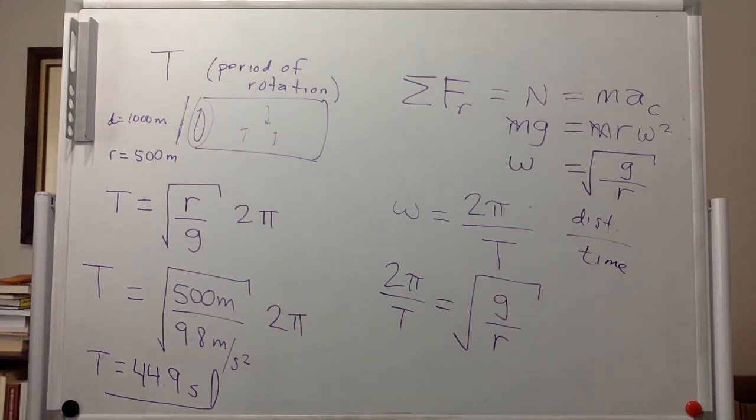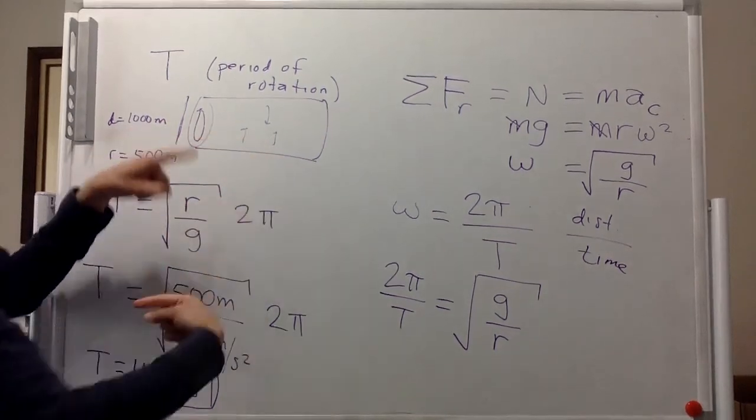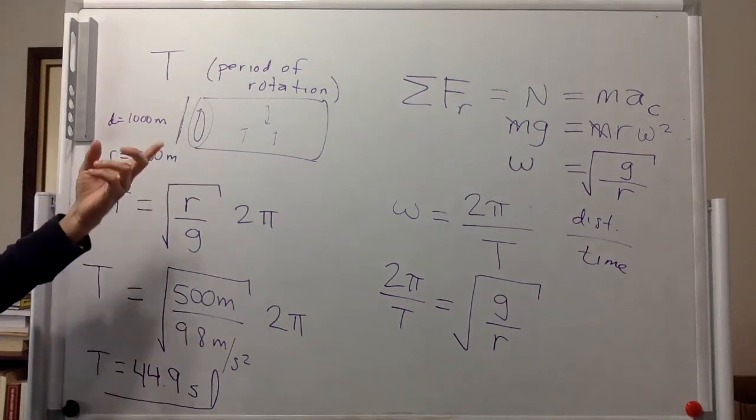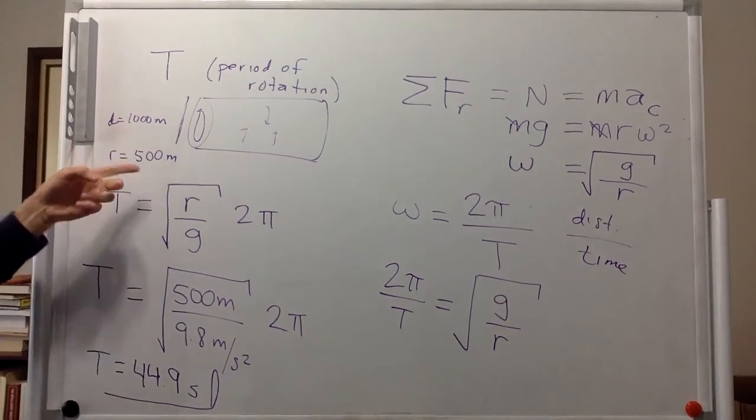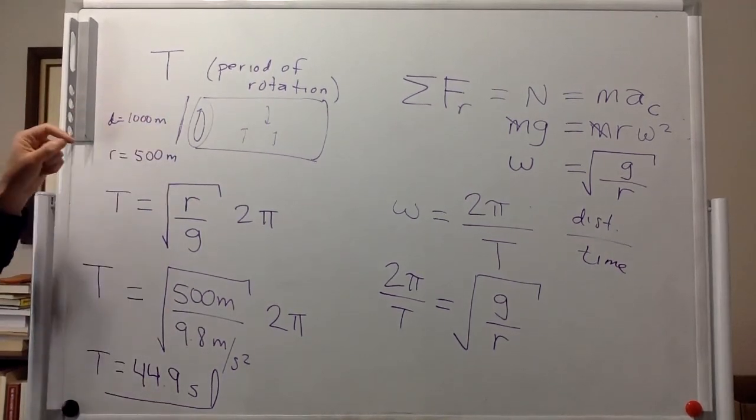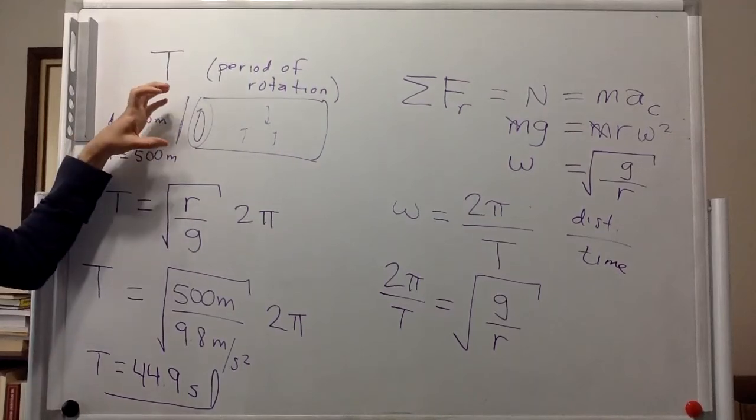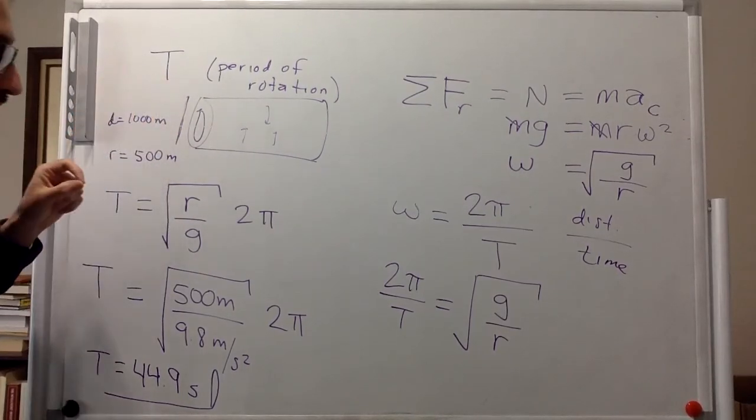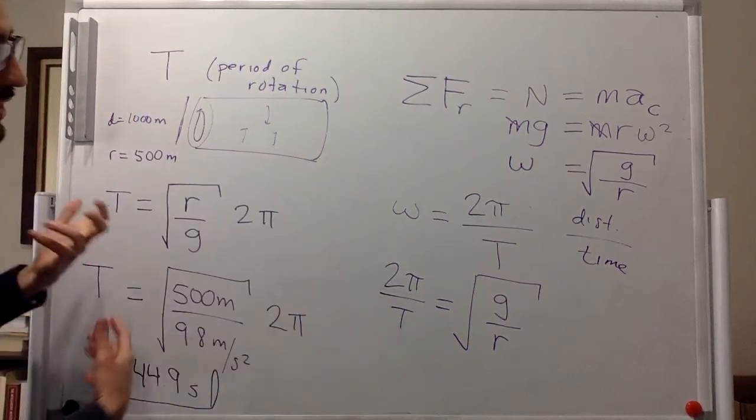So if this rotates approximately once every 45 seconds, and the diameter is 1000 meters, then you will feel a normal force that is the same as on earth.